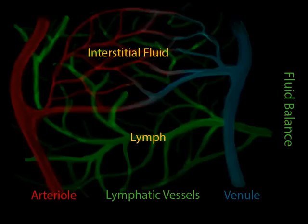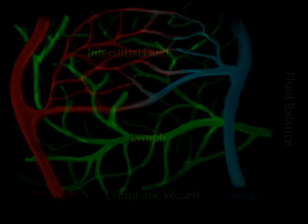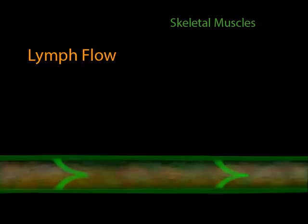How the lymph gets there is pretty amazing. There is no heart for this system of vessels to pump the lymph around. So how does lymph get to the locations it needs to be delivered to? The lymph moves through your body when you move your skeletal muscles. The contraction of skeletal muscles squeezes the nearby lymph vessels, pumping them and pushing lymph through the vessels.